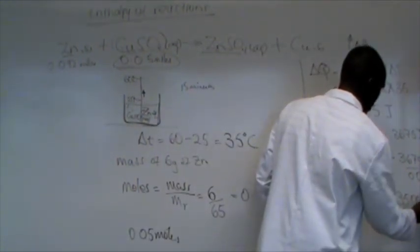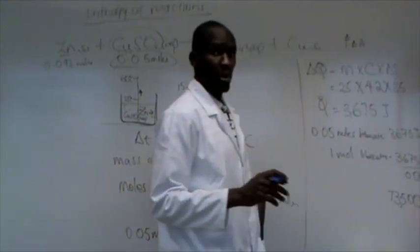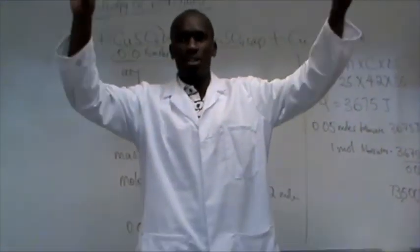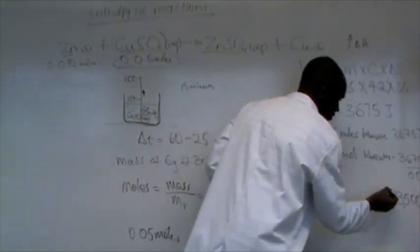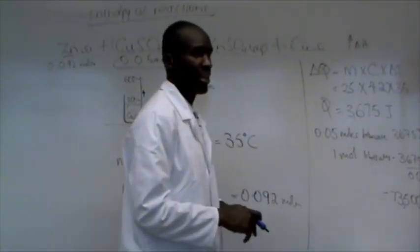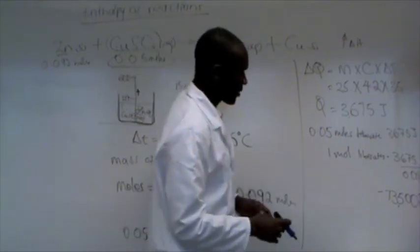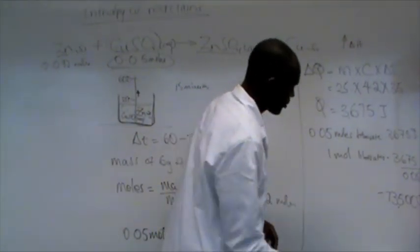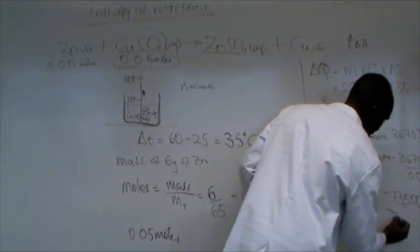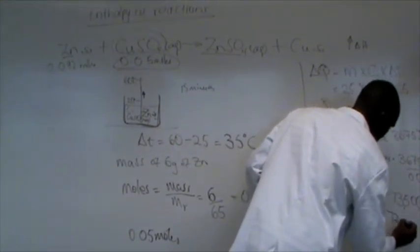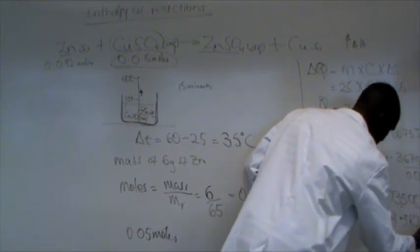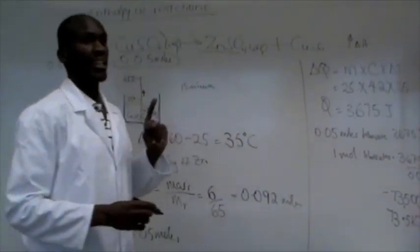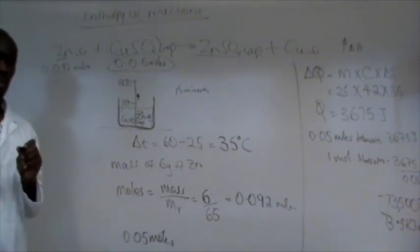73500 joules. Now, remember, because it's heat being given out, the reaction is exothermic. So, I'll have to include a negative sign over there. And I can present it in terms of kilojoules. So, it's going to be negative 73.5 kilojoules per mole. And that's our standard enthalpy of reaction.